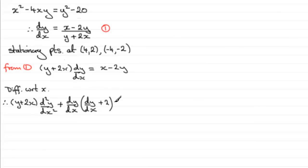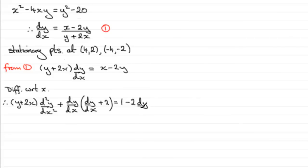On the right-hand side, differentiating x with respect to x gives 1, and differentiating −2y with respect to x gives −2 dy/dx through implicit differentiation.